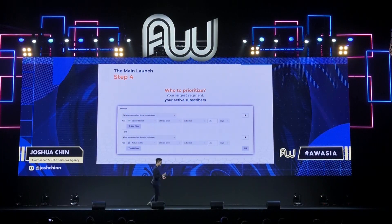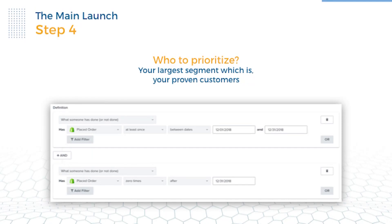Now we move on to the main launch. The main launch is where it goes out to the bulk of your email list. This is basically the main part of your holiday season — this is the Black Friday of BFCM. And who to prioritize? You're gonna prioritize people who are the most active in your subscriber base — people who have opened an email at least once in the last 45 days or are active on your website at least once in the last 45 days.